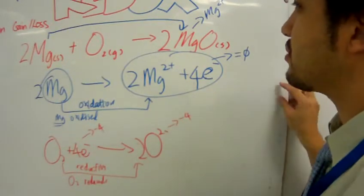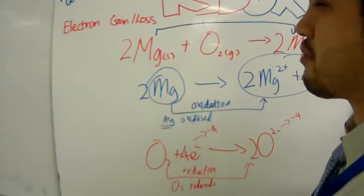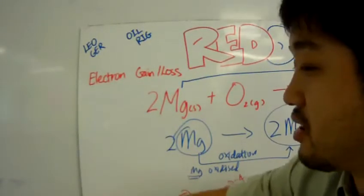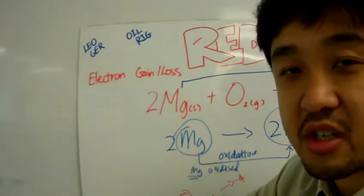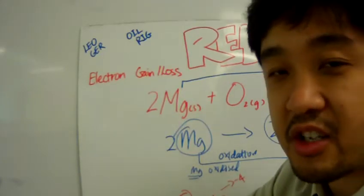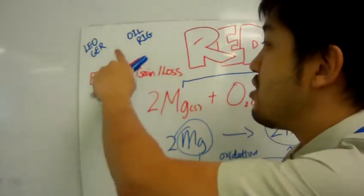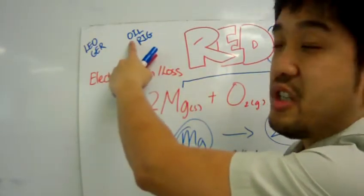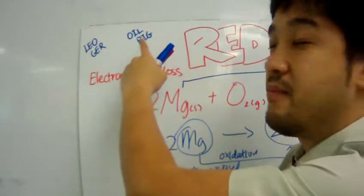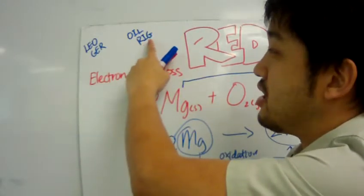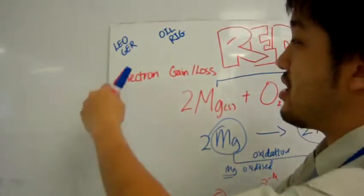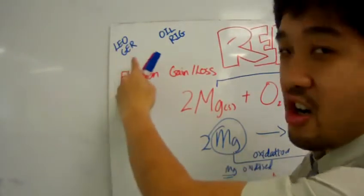So, a mnemonic that helps people remember whether electrons, how to define oxidation and reduction in terms of electrons is by using the mnemonic oil rig. Oxidation is loss or reduction is gain. There's also another mnemonic that says, Leo the lion says, GERD, RAWR.